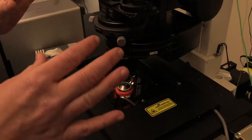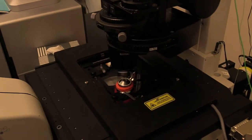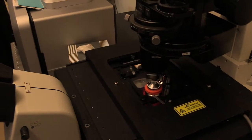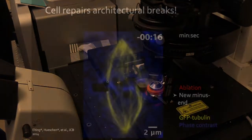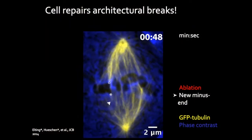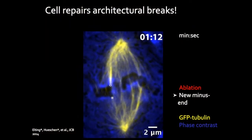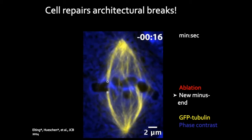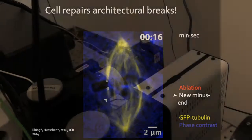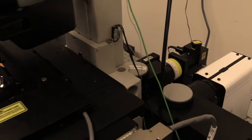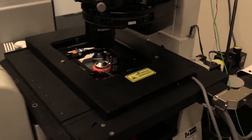We do that by simultaneous live cell imaging — we're imaging the cells as they're alive on a petri dish as they divide. We combine that with laser ablation, which we use to poke a hole inside the cell and mechanically perturb it.